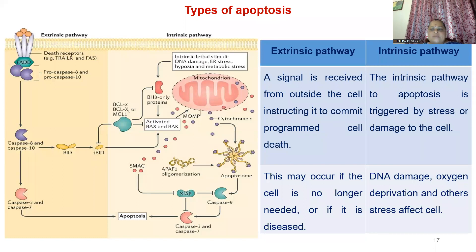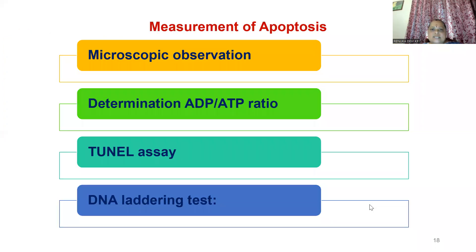There are two types of apoptosis pathways: the extrinsic pathway and the intrinsic pathway. In the extrinsic pathway, a signal is received from outside the cell instructing it to commit programmed cell death. The intrinsic pathway is triggered by stress or damage within the cells. This may occur if the cell is no longer needed or if it is in a diseased condition. DNA damage, oxygen deprivation, and other stress affect cells through the intrinsic pathway.